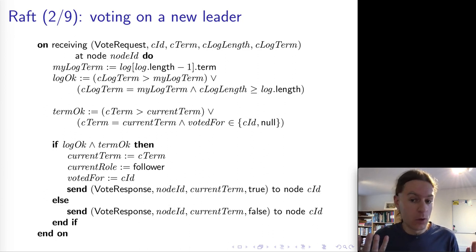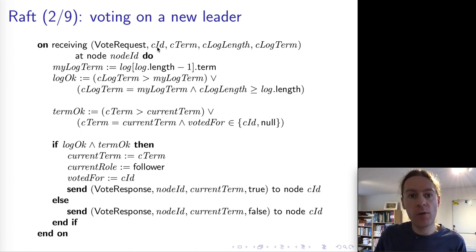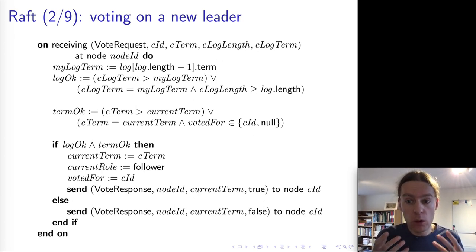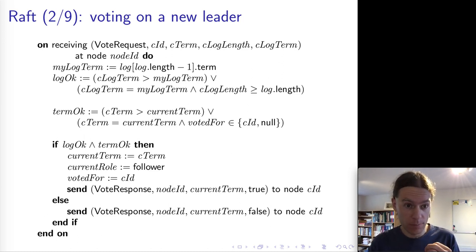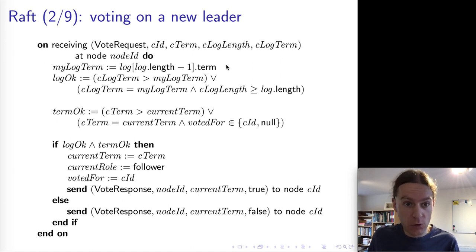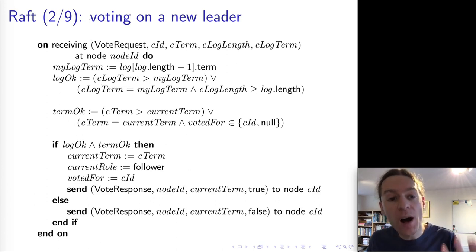Next is what happens to a node that receives one of these VoteRequest messages. The recipient checks if its local log is consistent with what the candidate claims. It looks at the last entry in its own log and gets the term of that entry — that's myLogTerm. If the candidate has a last log entry with a higher term than our own, the log is considered okay. Alternatively, if the candidate has the same term on the last log entry but the candidate's log length is at least as long as ours, the log is also okay.